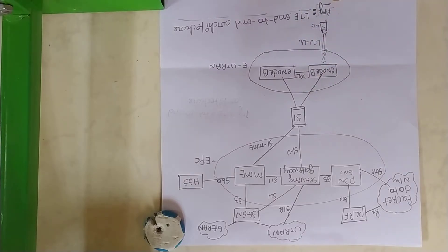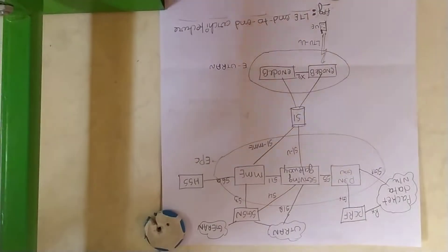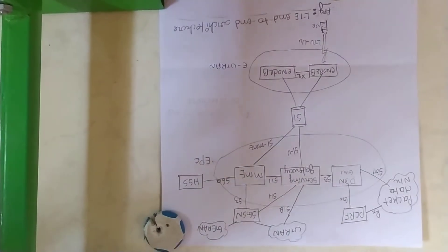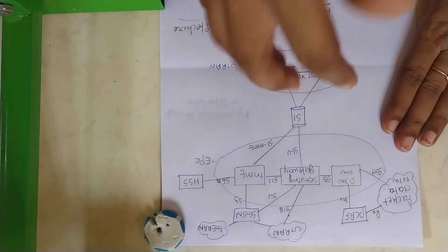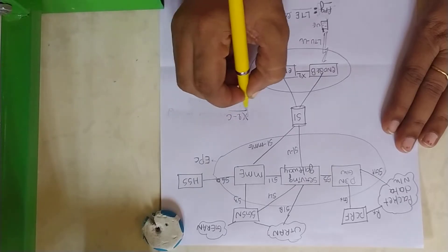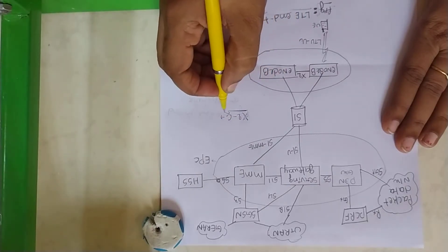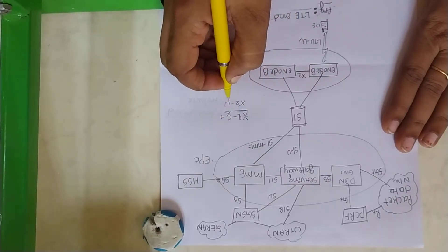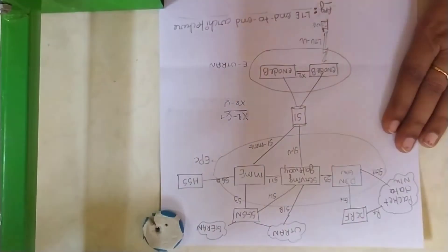There is an X2 interface between two E node Bs. It consists of X2-C and X2-U. X2-C is the control plane interface. X2-U is the user plane interface.